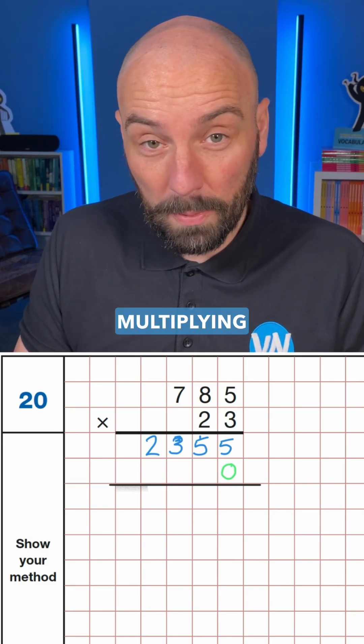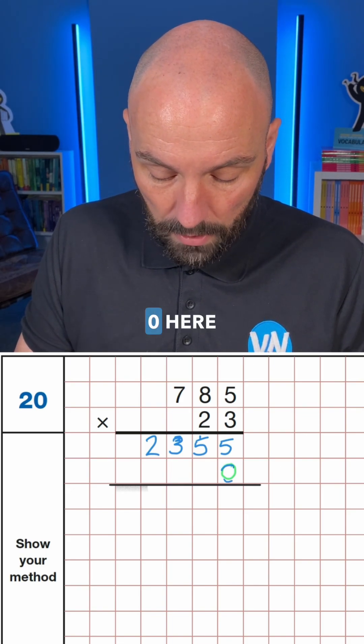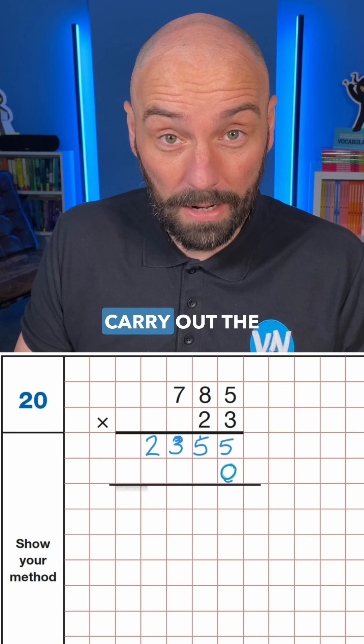Then again, because we're now multiplying by 20 with this number 2, we've got our placeholder 0 here, and then we can carry out the calculation.